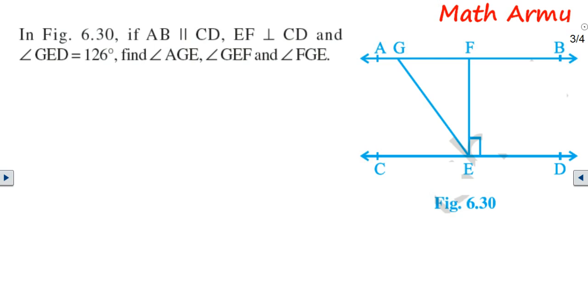In the given figure 6.30, if AB is parallel to CD and EF is perpendicular to CD and angle GED equals 126 degrees, find angle AGE, GEF, and angle FGE.